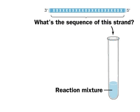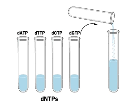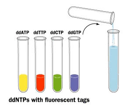To determine the sequence of a segment of DNA, we add these ingredients: a primer to allow DNA polymerase III to form the complementary DNA strand, all four DNTPs as building blocks, and all four DDNTPs, each marked with its own distinctive fluorescent marker — red, blue, and so forth.